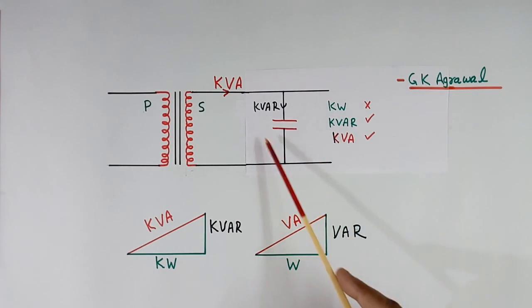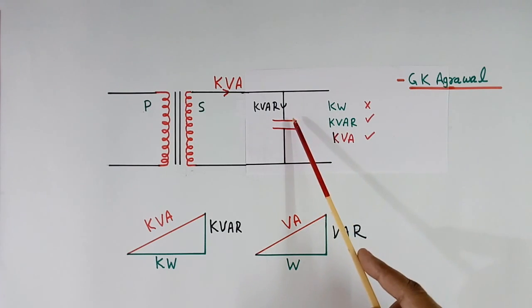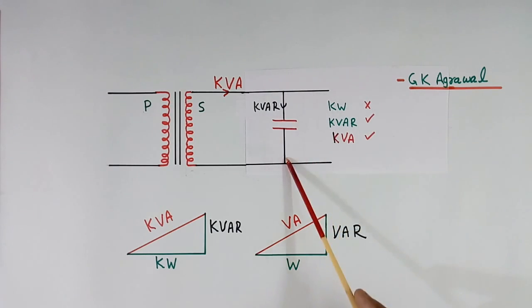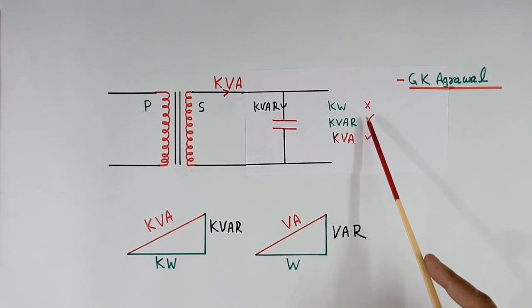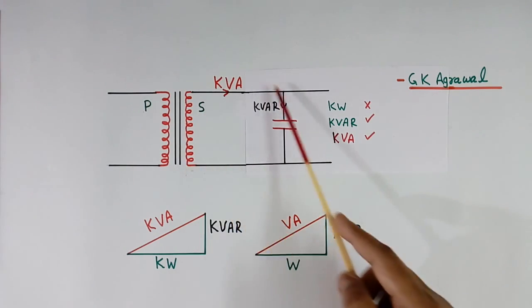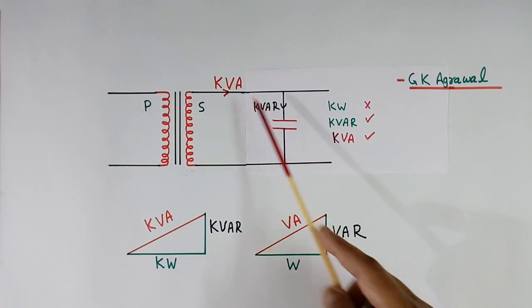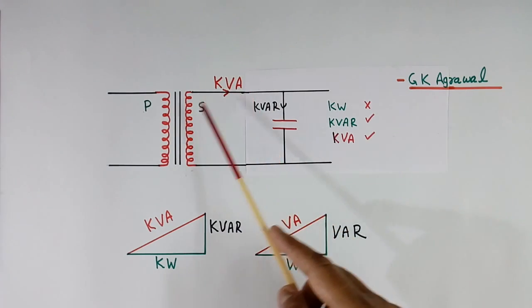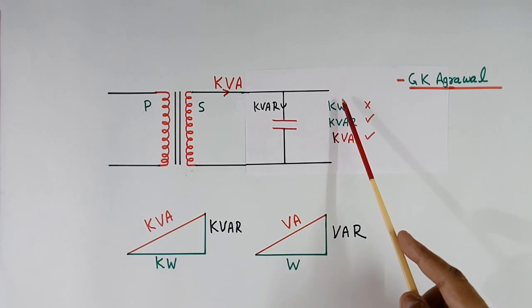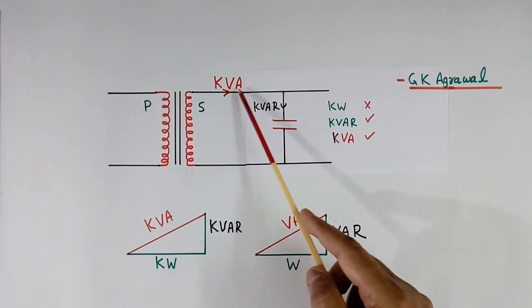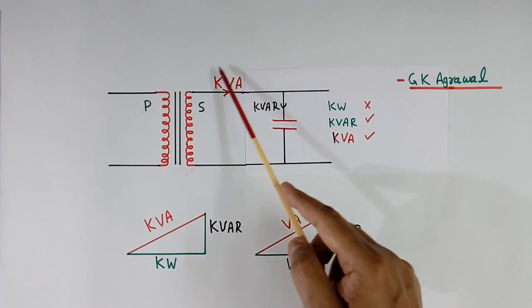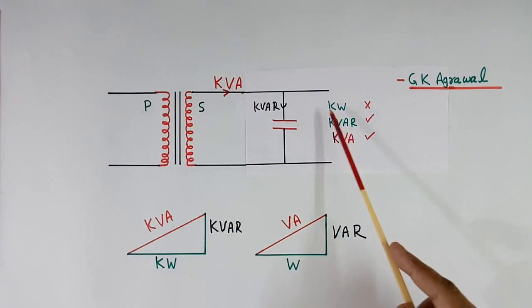Here I have connected only one capacitive load — no resistive load. So kW is not there, only reactive power kVAR is flowing. The same power will flow in the transformer as well, so kVA and kVAR will be equal here. This kVA power will flow in the transformer. So you see, kW is not there, but kVA power is still flowing — so the transformer is rated for kVA, not in kW.